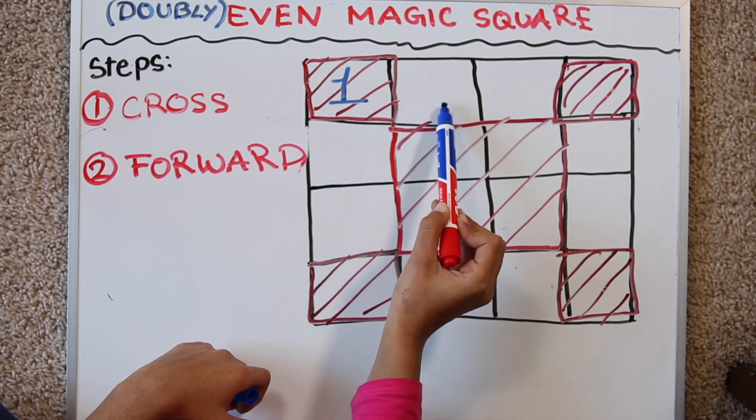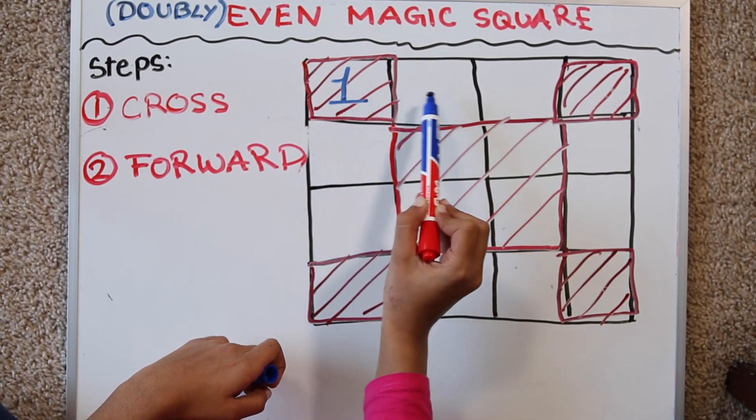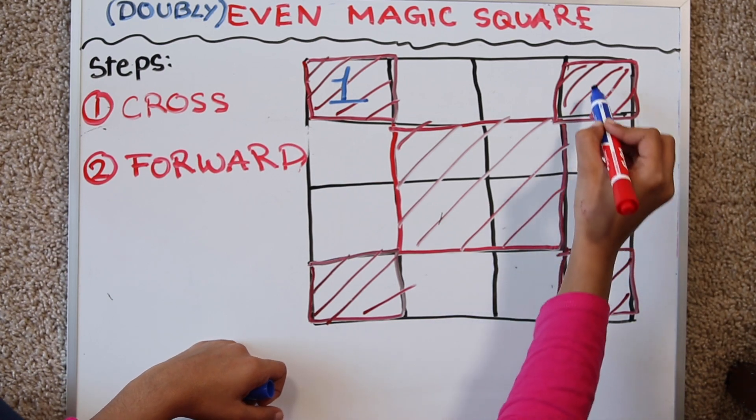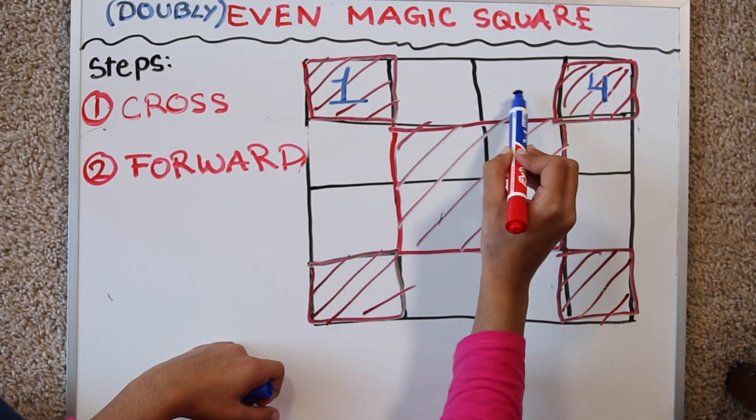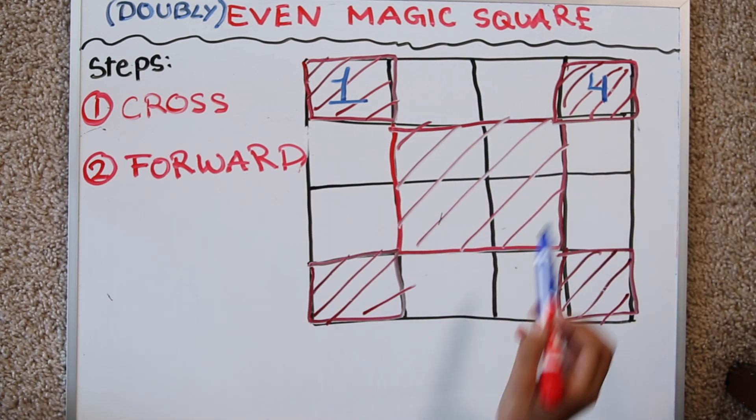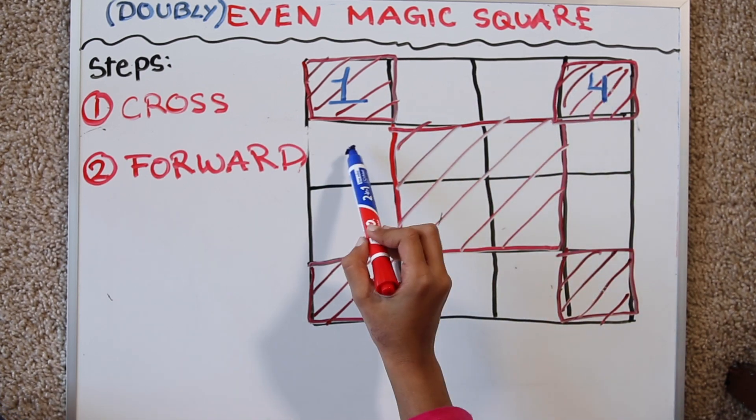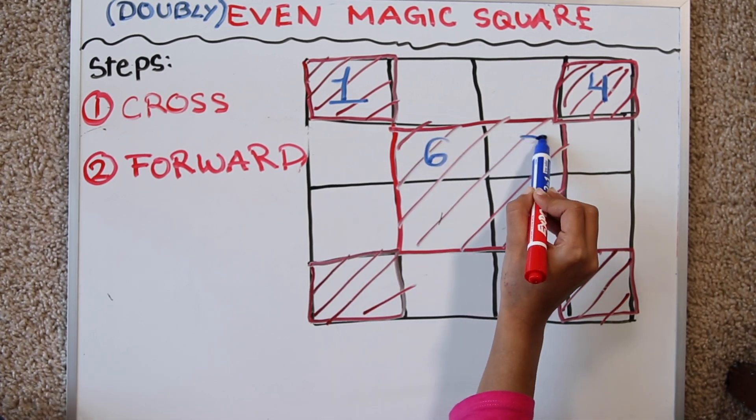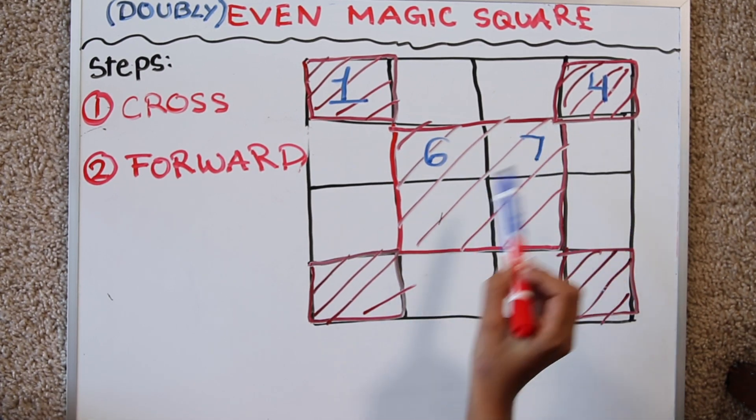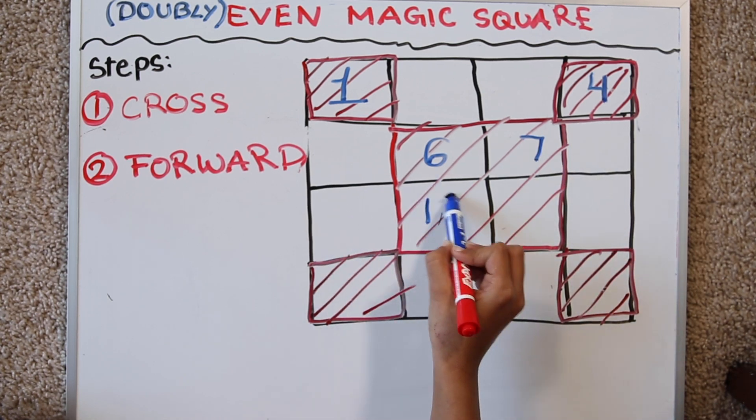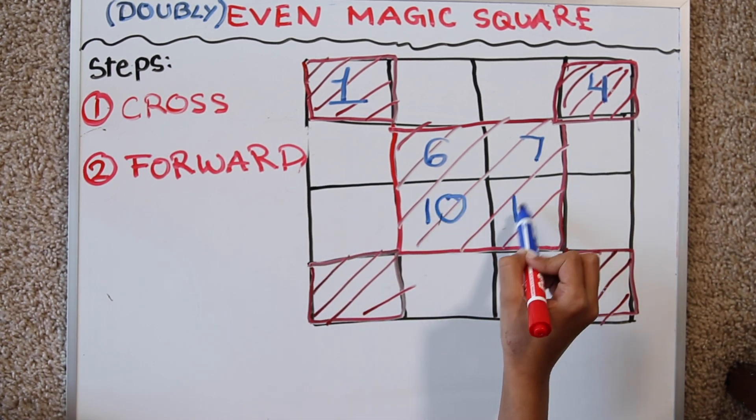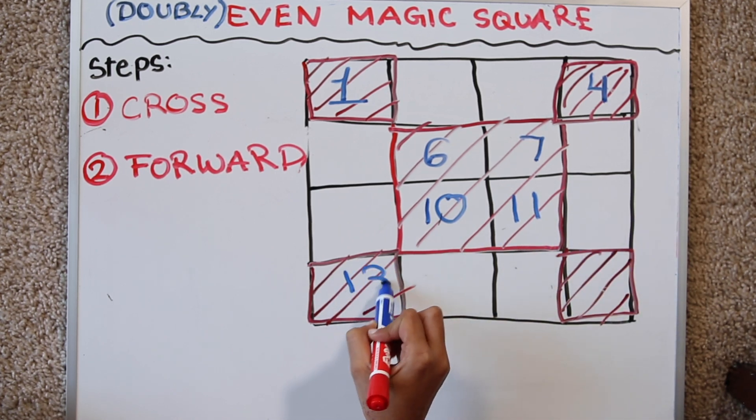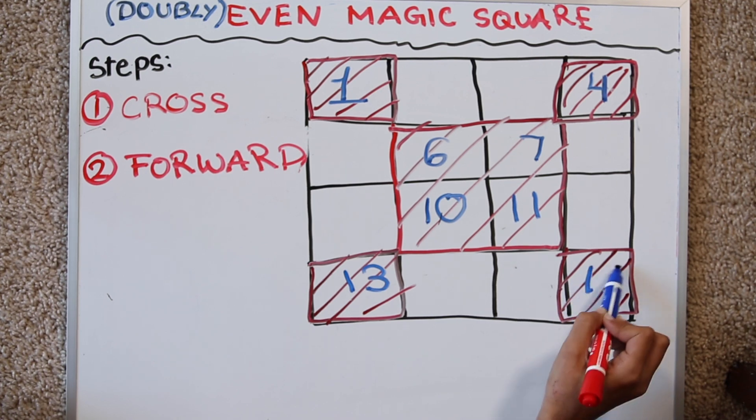So this would be 1. Then we still count the square: 1, 2, 3. But since this is shaded we're going to write a 4 here. But we don't write it in these blank spots. Then we move to the second row: 5, 6. So we write it here since it's shaded. 7, empty. 8, 9, 10, 11. We skip this one. 12, 13, 14, 15 and 16.